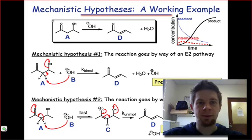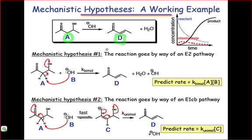Mechanistic hypotheses allow us to make predictions about the course of chemical reactions. Consider the reaction of A with hydroxide to form compound D. We could imagine two mechanistic scenarios for this reaction.